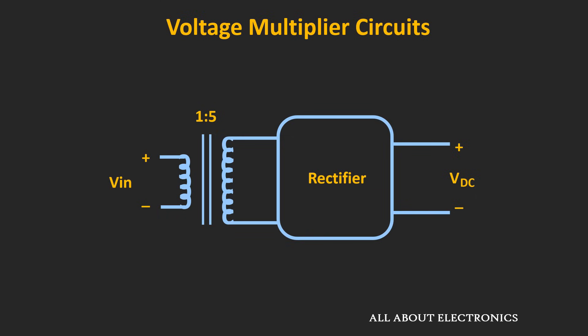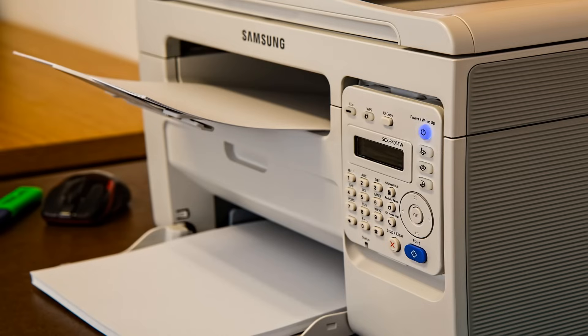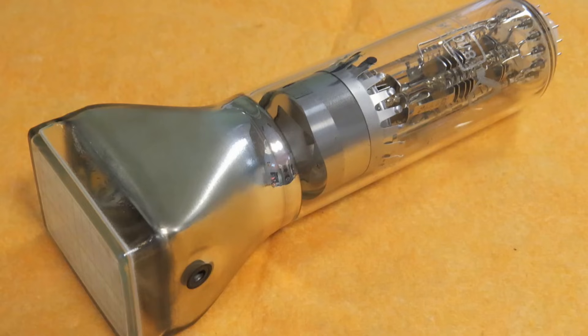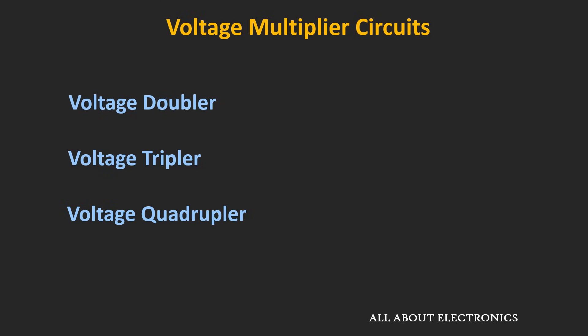These voltage multiplier circuits are used in many applications. For example, they are used in fax and photocopying machines as well as in bug zapper circuits. Previously, they were also used in cathode ray tubes. In this video, we will see three types of voltage multiplier circuit: the voltage doubler, voltage tripler, and the voltage quadrupler.